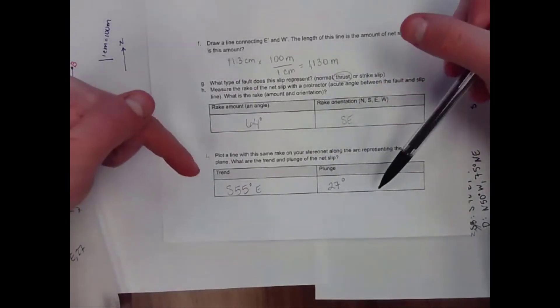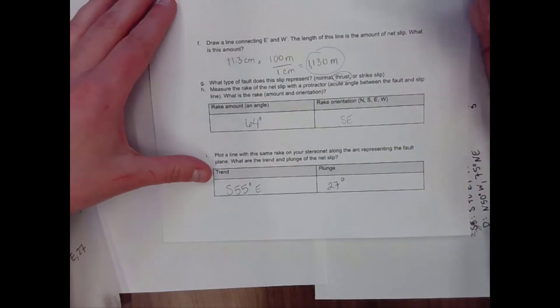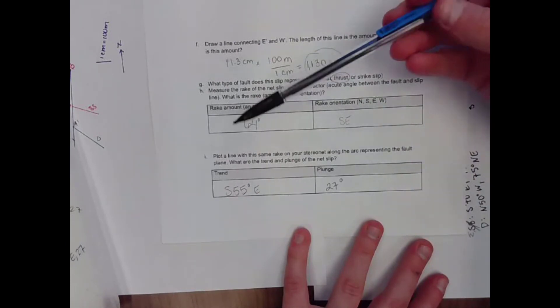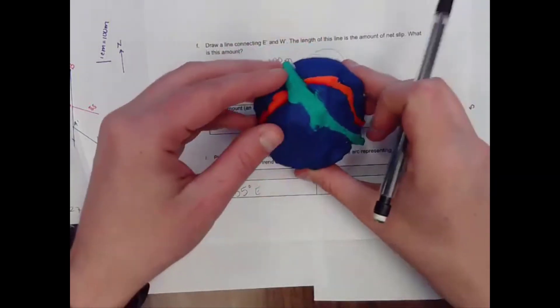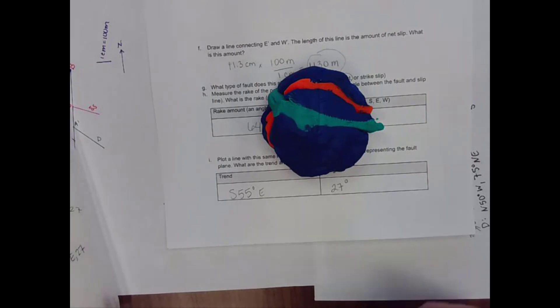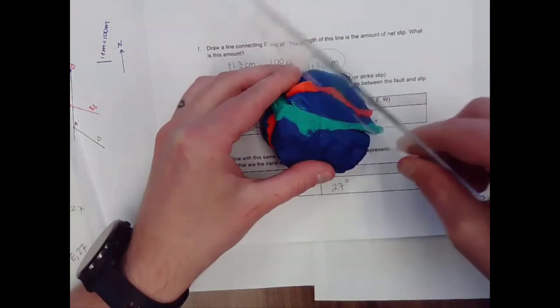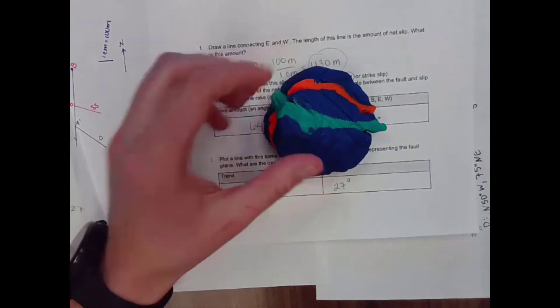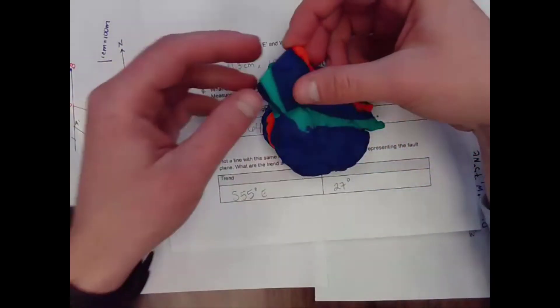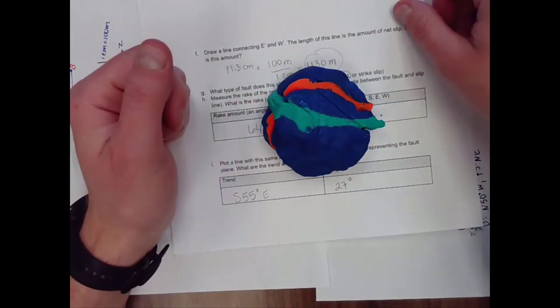So what this means is that I have slip. My fault has slipped 1130 meters. And it has slipped in the direction of south 55 east 27. So if I went up to that fault surface, let's just do it. Here's my fault surface. I know my fault is coming down to the east. That means that if I came up and looked for slicken lines, those slicken lines should be trending south 55 east, plunging 27 degrees. So those would be my slicken lines right there. And this fault block would have moved, moved up in that direction. So those marks would be indicating how much that had moved up. All right, thanks for watching.